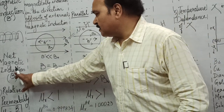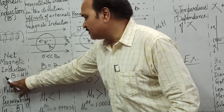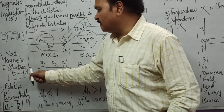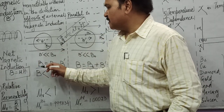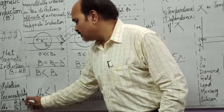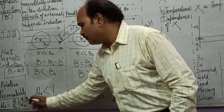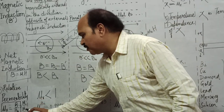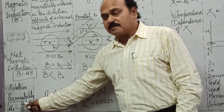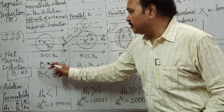Relative permeability is the ratio of the net magnetic field in the substance to the magnetic field without the substance. We know B0 = μ0·H and B = μ·H, so dividing B by B0 gives μ/μ0, which is the relative permeability μr. So relative permeability is the ratio of magnetic induction in the medium to magnetic induction in free space.